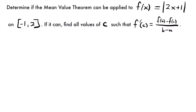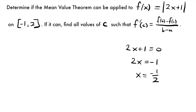Let's look at another example. Here we want to determine if the mean value theorem can be applied to f of x equals the absolute value of 2x plus 1 on the interval from negative 1 to 2. The moment you see absolute value bars, a red flag should go off because absolute value functions always have a point where the function is not going to be differentiable. The way you check that is to set what is inside your absolute value bars equal to 0 and solve for x. So if we set 2x plus 1 equal to 0, we get x equals negative 1 half.